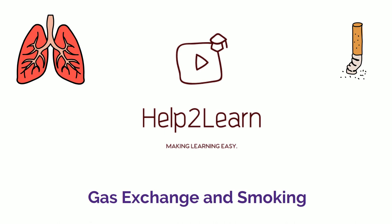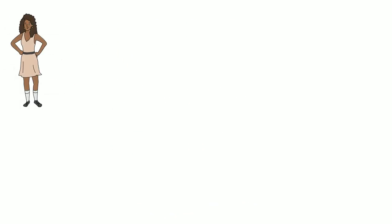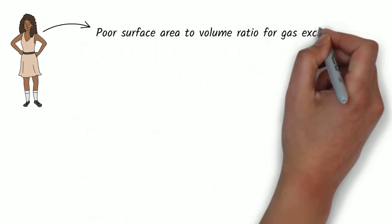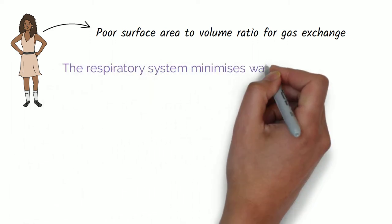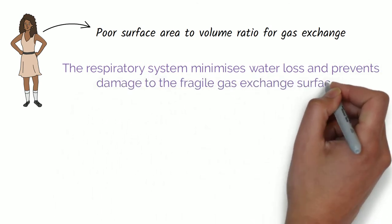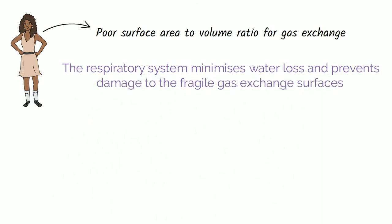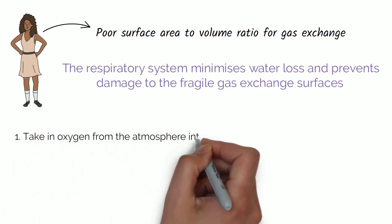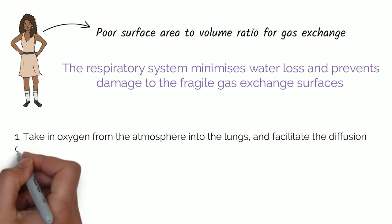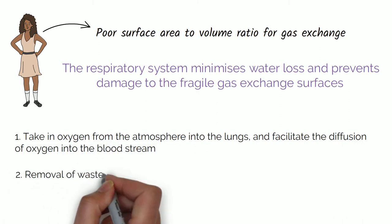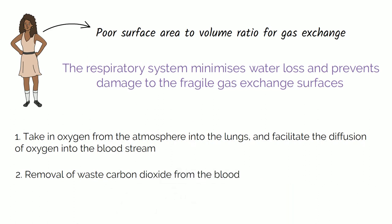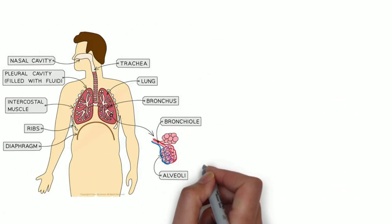Mammals such as humans have a poor surface area to volume ratio for gas exchange, and so we have evolved a highly adapted internal gas exchange system known as a respiratory system. The respiratory system minimizes water loss and prevents damage to the fragile gas exchange surfaces. The purpose of gas exchange is to take in oxygen from the atmosphere into the lungs, facilitate the diffusion of oxygen into the bloodstream, and remove waste carbon dioxide from the blood and exhale it. These gases move and exchange across specially adapted surfaces by diffusion.